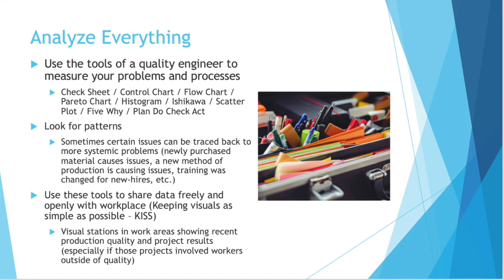Using these tools, you can see if certain kinds of patterns emerge. Sometimes you can trace your issues back to something more systemic — newly purchased material causing issues, a new method of production causing issues, maybe training was changed for new hires and that wasn't communicated and suddenly that's causing a quality defect. Maybe any of the changes just mentioned were inspected at first and everything appeared the same, but due to your tools and analysis, you noticed that things are trending towards being non-conforming and you can catch it early. And the best thing you can do with your findings? Share them freely and openly with the entire workplace. Within the quality department, you can go into very specific details and high-level analytics, but when it comes to the workflow or any other department, have easy-to-understand visuals that people can understand just by looking at them for a few seconds. Keep it simple. And if you have visuals related to each specific production cell, it helps get buy-in from the production team — they can take some ownership in the data.